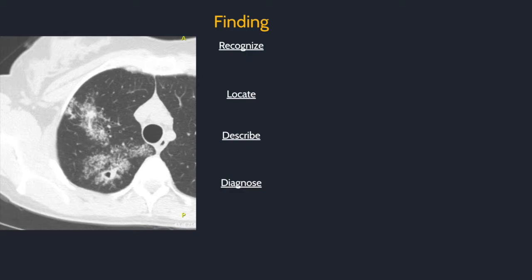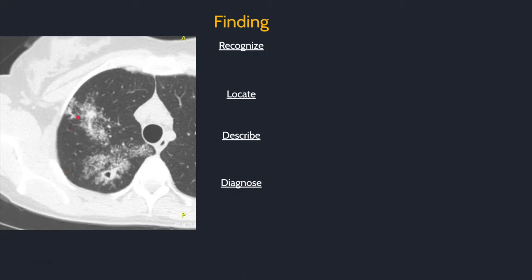For example, with this chest CT, you would first recognize the finding, then locate it in the right upper lobe, describe the finding — tree and bud nodularity with surrounding ground glass and at least one cavitary nodule — then diagnose the pathology: active tuberculosis infection.